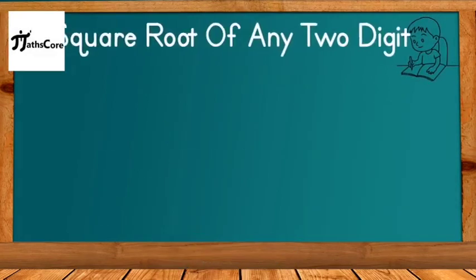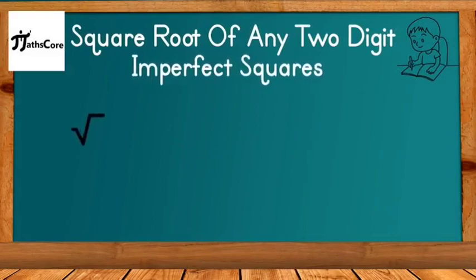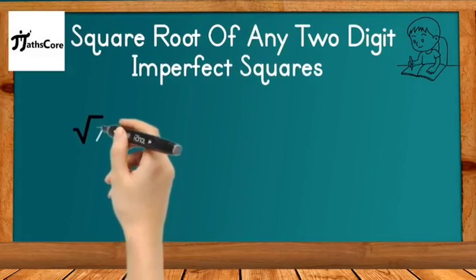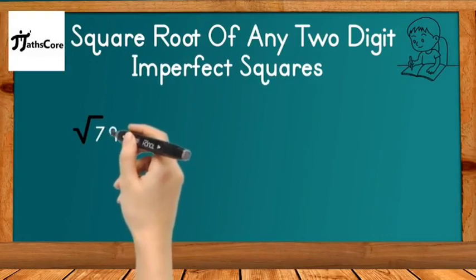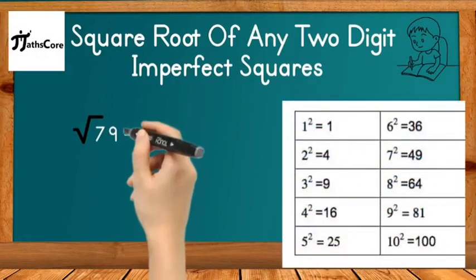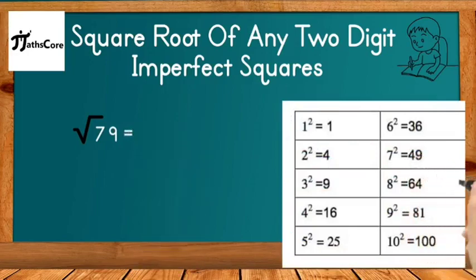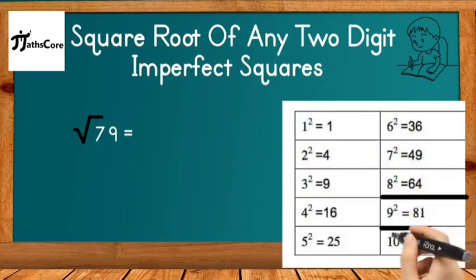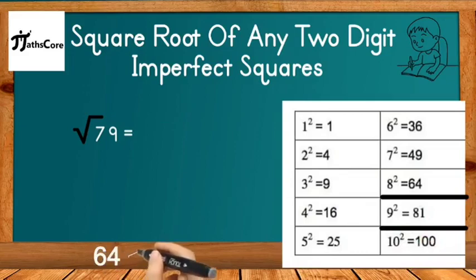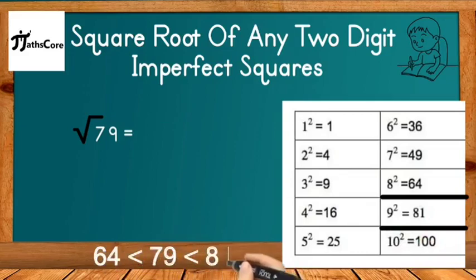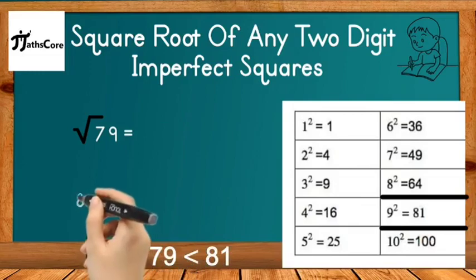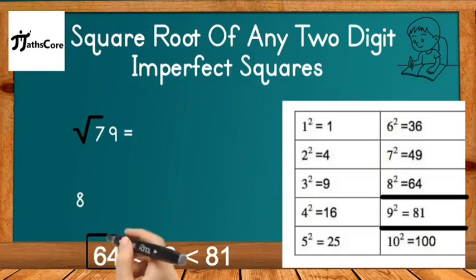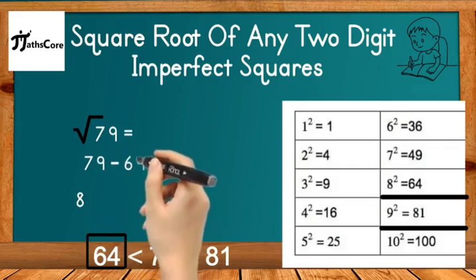The next example is the square root of 79. First, write down the squares of digits 1 to 9. Find between which two perfect squares 79 lies: 8² = 64 and 9² = 81, so 79 lies between 64 and 81. Take the lesser perfect square, which is 64. The square root of 64 is 8, so write down 8.